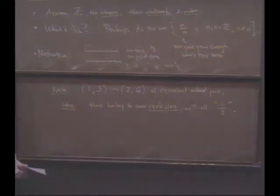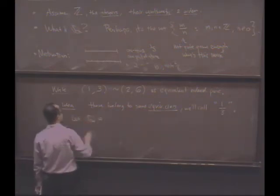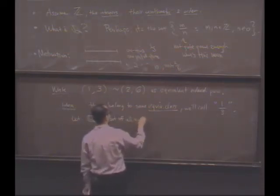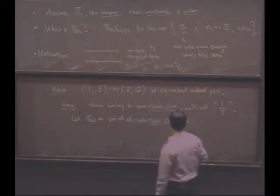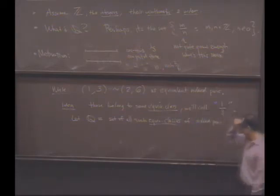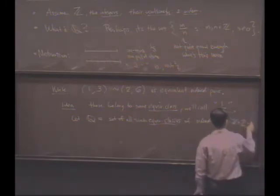equivalent. I'll have you think about that, but the set of all such classes will be called Q, which is basically the set of all such equivalence classes of pairs, of these ordered pairs. What ordered pairs? The ordered pairs in Z cross Z. We might have to be a little careful here, maybe Z cross Z minus zero, the set containing zero.